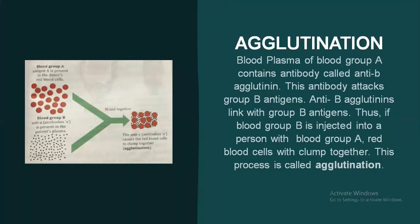Agglutination is the clumping of RBCs. When particulate antigens react with a specific antibody, an antigen-antibody complex forms visible clumping under optimum temperature and pressure. Such a reaction is called agglutination.